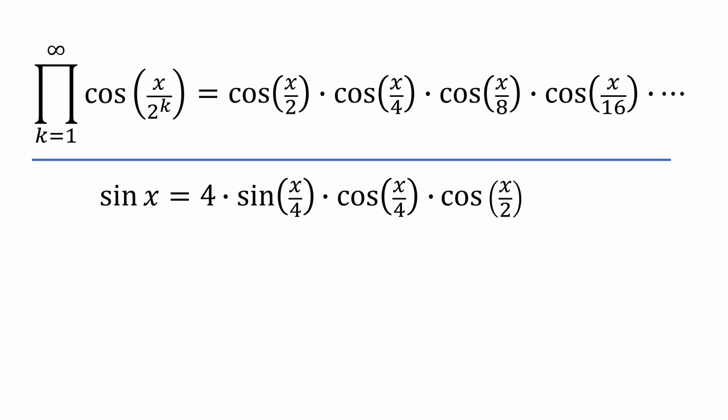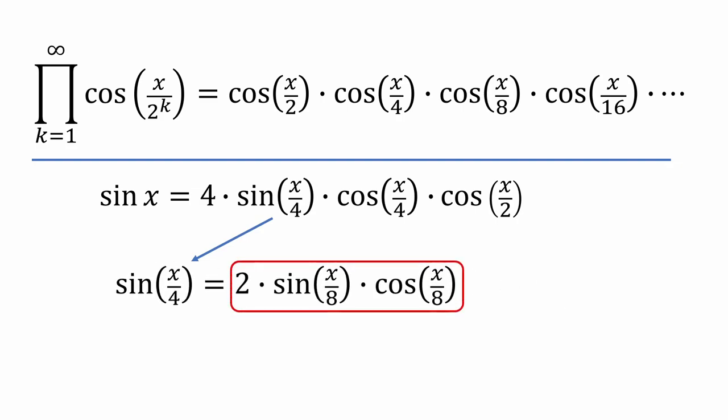Let's do it again. We'll take sine x over 4 and rewrite it as the following. That expression will get fed back into sine x over 4 just like before. And now we have the following expansion.